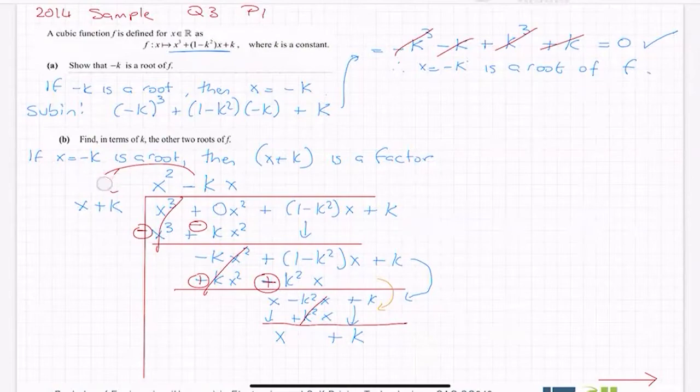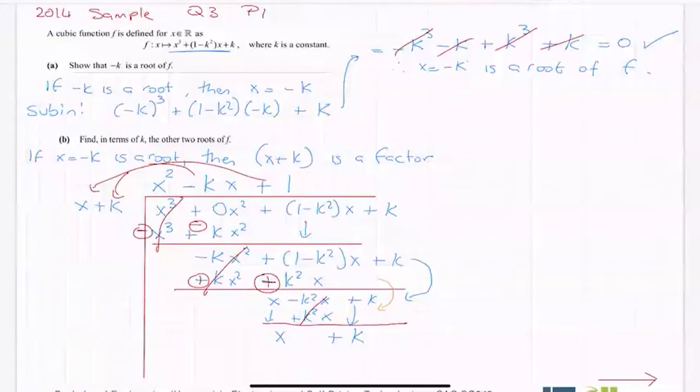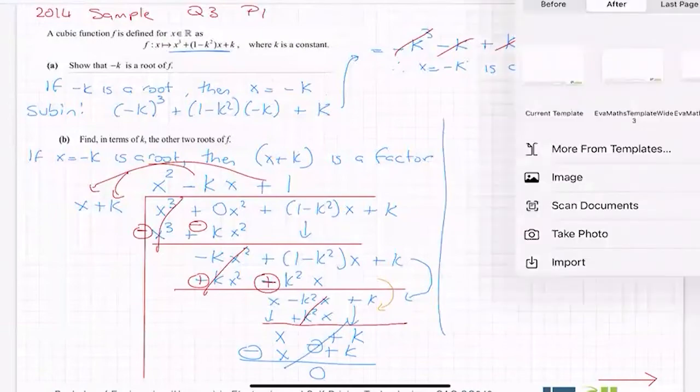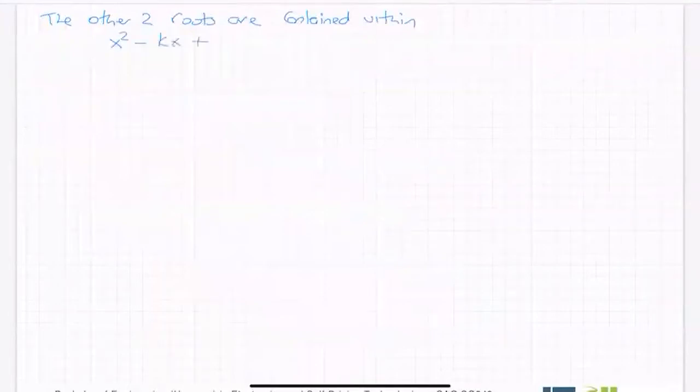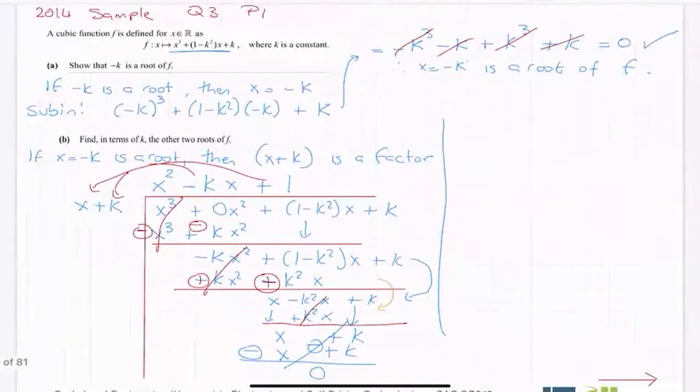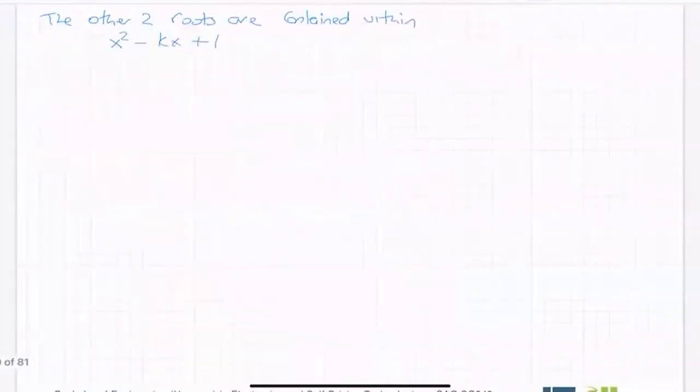What must I multiply by that x on the outside to bring it up to the x there? Well, I need just a plus one. And you multiply that plus one by everything on the outside. So plus one by x is x plus one by k is plus k. Change the sign, change the sign. And you can see that I have my solution. And so I might add a page. The other two roots are contained within x squared minus kx plus one. I'm just going back to read the question again. Find in terms of k, the other two roots of x. So I have to solve this one. It's got a k in it. So it'll be easier to use the minus b formula.